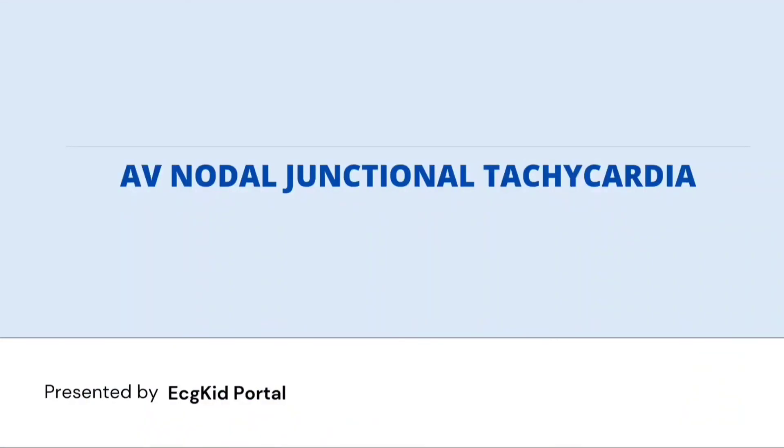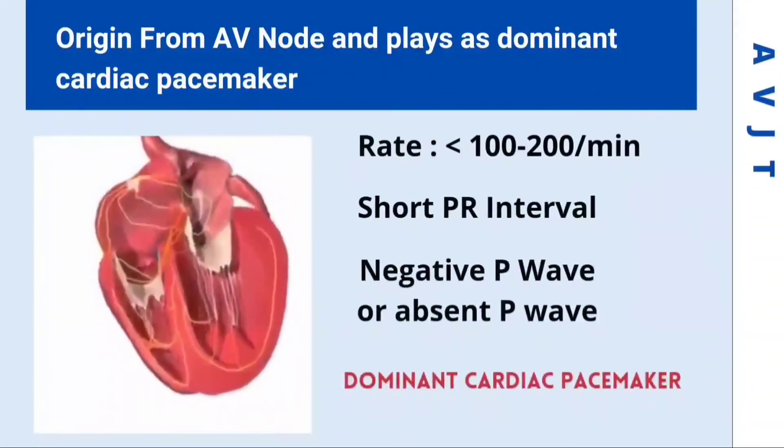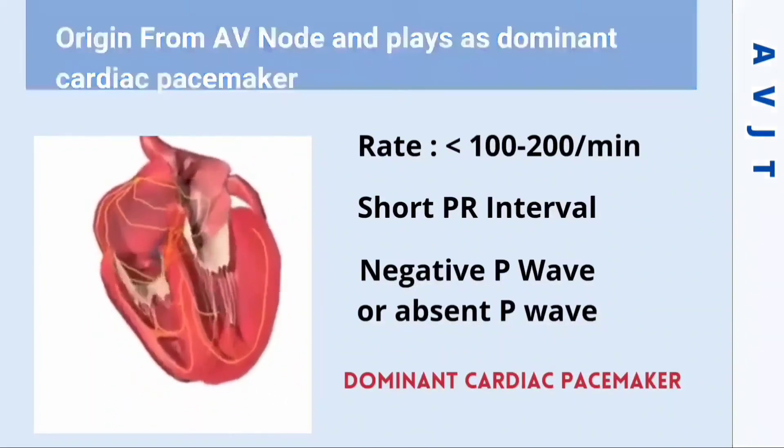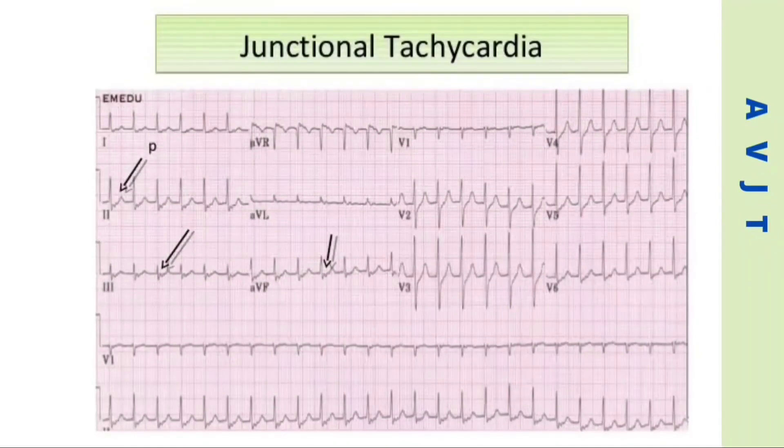AV junctional tachycardia is characterized by QRS complexes of AV nodal origin that occur at a regular rate of typically 100 to 200 per minute. This dysrhythmia emerges from the AV junction and serves as a dominant cardiac pacemaker with an abnormally rapid rate, with negative P wave vectors in inferior leads with short PR interval, similar to other junctional rhythms except abnormally fast.